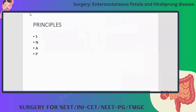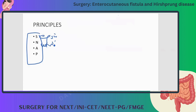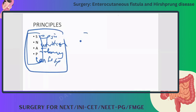So what are the principles to treat this fistula? They are known as SNAP principles — S, N, A, P. You treat the nutrition aspect of the patient, do an anatomical assessment by doing proper investigations, and then plan for surgery. These are the SNAP principles.